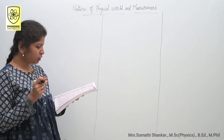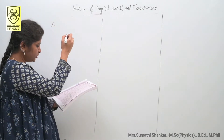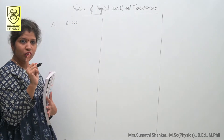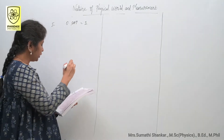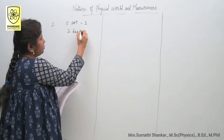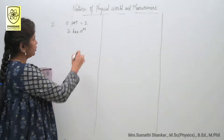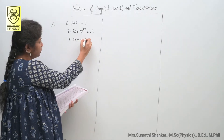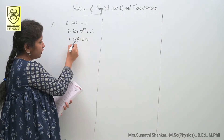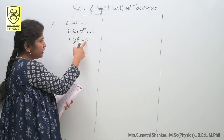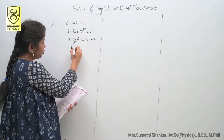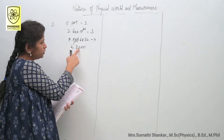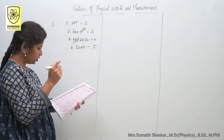Fifth question: which of the following has the highest number of significant figures? Option A: 0.007 — the leading zeros are not significant, so only 1 significant digit. Option B: 2.64 × 10²⁴ — the power of 10 is irrelevant, so 3 significant digits. Option C: 0.0006032 — leading zeros not significant, but counting 6, 0, 3, 2 gives 4 significant digits. Option D: 6.3200 — trailing zeros after the decimal point count, giving 1, 2, 3, 4, 5 significant digits. The highest is option D.